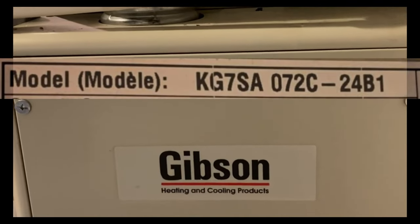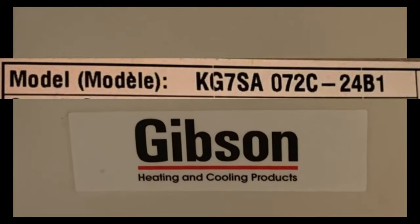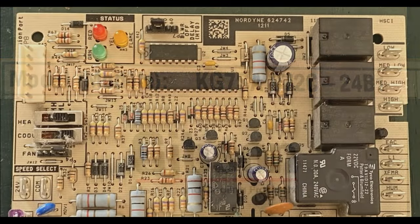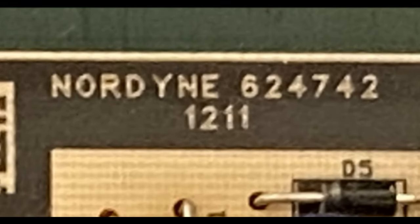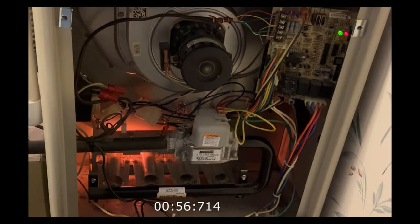The model number for this Gibson furnace is KG7SA072C-24B1, and the control board for this model is Nordyne part number 624742. Make sure to verify the correct specifications for the board as there are both 24 and 120 volt variants.